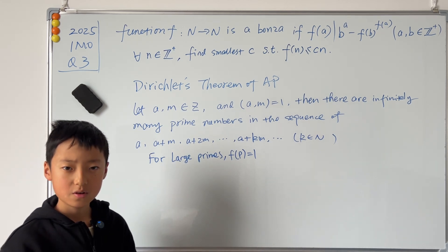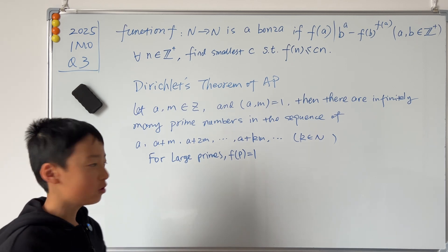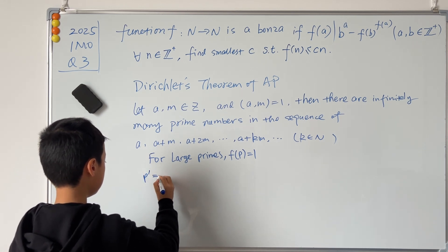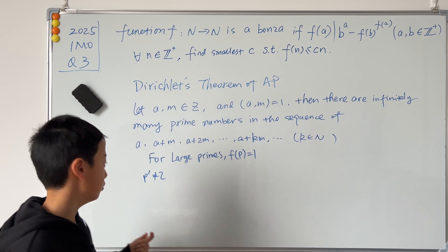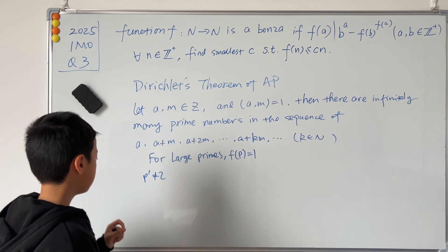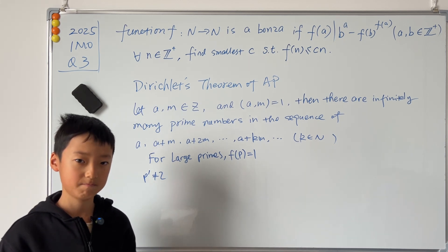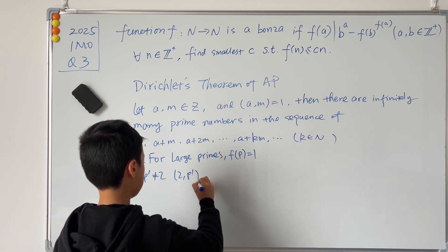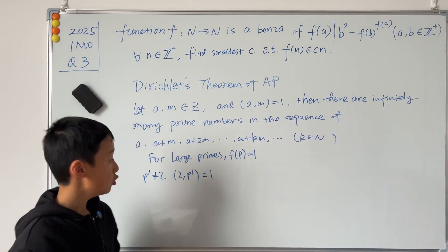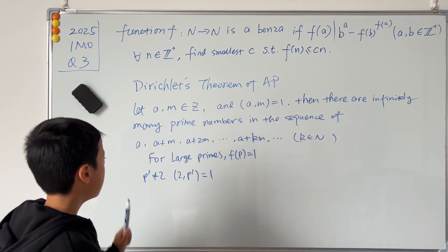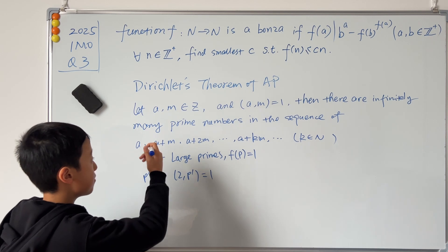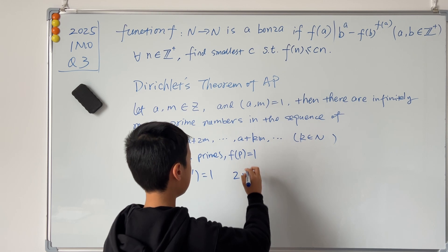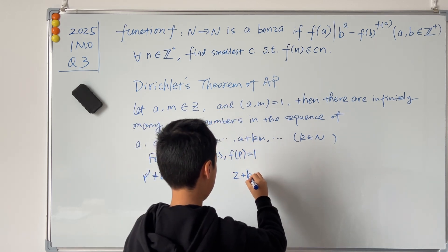Well, how does this help? The first thing we're going to do is let a new prime number, we'll call it p'. This prime number is not going to be equal to 2, and I'll explain this later. So p' is an odd prime, and this odd prime and 2 must be coprime. So using Dirichlet's theorem of AP, we can see that there are infinitely many prime numbers in the sequence 2 + kp'.